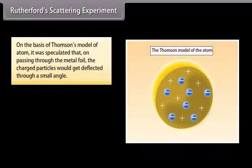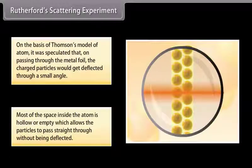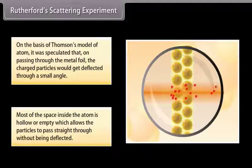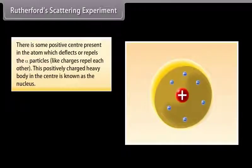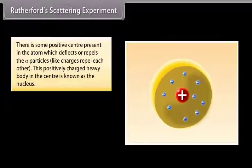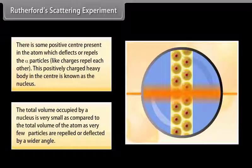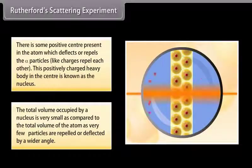On the basis of Thomson's model of atoms, it was speculated that on passing through the metal foil, the charged particles would get deflected through a small angle. The results showed: 1. Most of the space inside the atom is hollow or empty, which allows particles to pass straight through without being deflected. 2. There is some positive center in the atom which deflects or repels the particles — like charges repel each other. 3. This positively charged heavy body in the center is known as the nucleus. The total volume occupied by a nucleus is very small compared to the total volume of the atom, as very few particles are repelled or deflected by a wider angle.